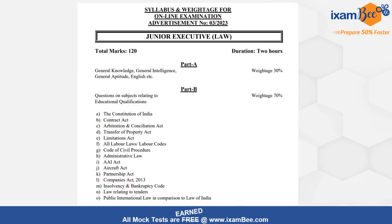By now, you know the exam pattern. There are 120 questions for 120 marks and the duration of the exam is 2 hours. Part A has 30% weightage, meaning 36 questions — 9 questions each from General Knowledge, General Intelligence, General Aptitude, and English.